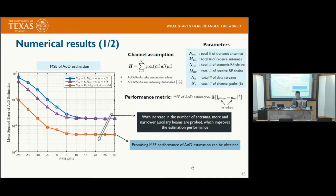We present numerical results evaluating the accuracy of our proposed approach. The channel is a multi-path model with six paths. The figure shows the mean squared error (MSE) of AOD estimation under different numbers of transmit and receive antennas. With increasing transmit antennas — forming relatively narrower beams — the MSE of angle estimation improves, and the proposed approach achieves very good angle estimation performance under this multi-path channel.